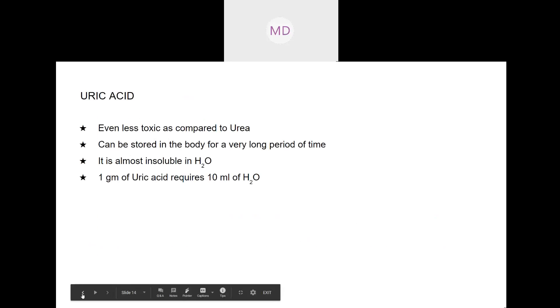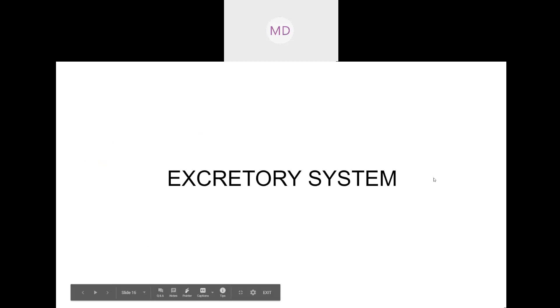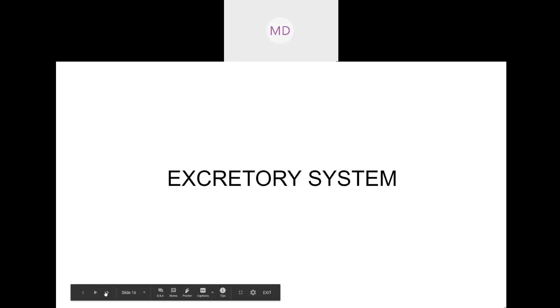That covers uricotelic organisms. Now we move to the excretory system. Just as food gets digested through the digestive system, for excretion to work there needs to be an excretory system. The excretory system comprises different organs compiled together that perform the function of excretion.